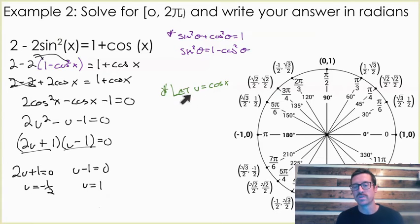Then once again, we don't care what u is. U is a variable that we introduced. We know u is equal to cosine x. So let's substitute our cosine x back in.